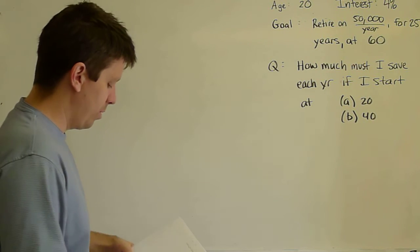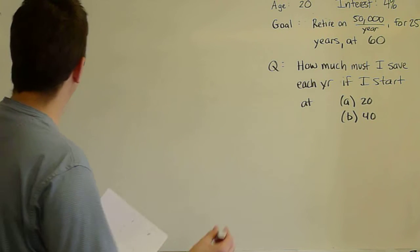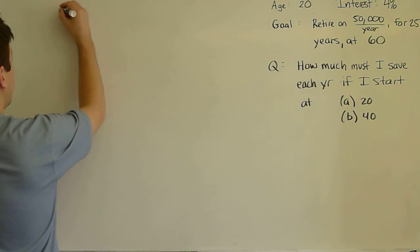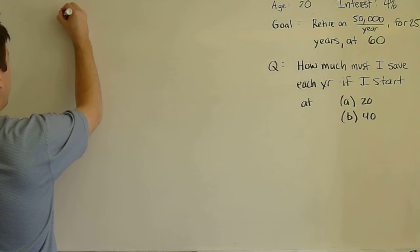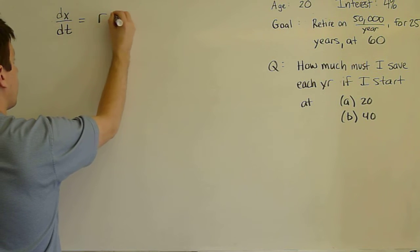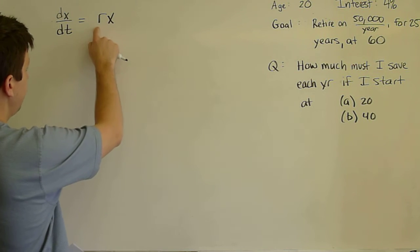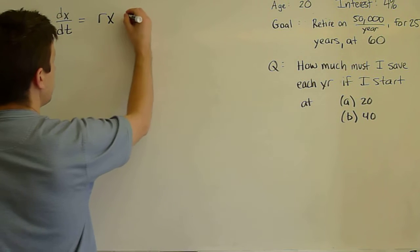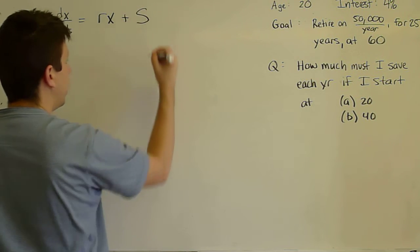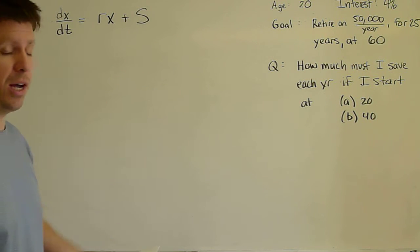So to solve this problem we look first of all at the differential equation for financial growth. So the rate of change of your money or principle is the interest rate times your existing balance plus additional contributions if S is positive or withdrawals if S is negative.